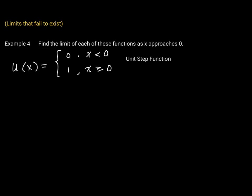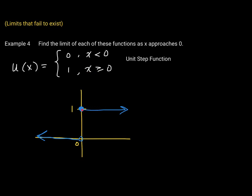I'd invite you to pause the video here, graph this function for yourself, and then let's see if our graphs agree. The unit step function u(x) says your function values are zero — the function lies right on the x-axis — whenever x is less than zero, with an open circle there. The function values equal one for x values greater than or equal to zero, with a closed circle there.